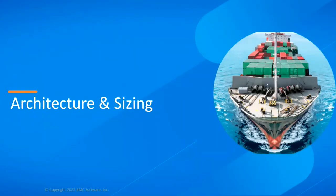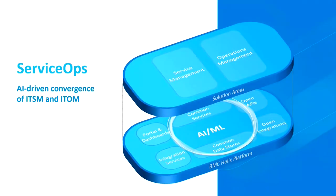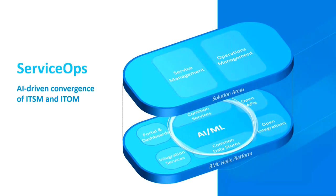The first step is to talk about the architecture and sizing of the solution. The ITSM IT service management software now sits alongside operations management and other BMC products making up the service ops offering, taking advantage of a number of common services provided by the Helix platform. When we get to the deployment steps later on, you'll see there's more than just ITSM being installed. We have a Helix platform layer which provides single sign-on, dashboards functionality, and support for more advanced capabilities like AI-type ITSM insights. On top of that we offer the products themselves — service management, ITSM, operations management, and cost optimization.